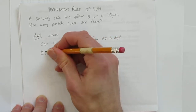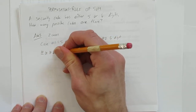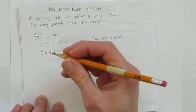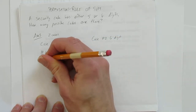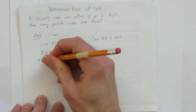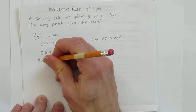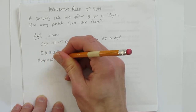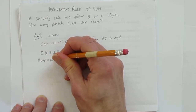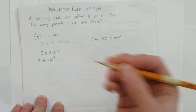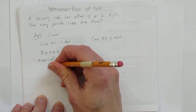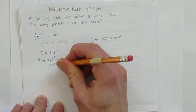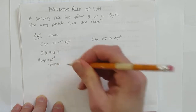There are ten choices for each position — ten choices, ten choices, ten choices, ten choices, ten choices — five times. So the total number of ways to make a five-digit code is ten times ten times ten times ten times ten, or ten to the power of five. That's a hundred thousand.